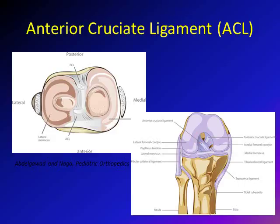What is the main function of the ACL? The main function of the ACL is that it prevents anterior displacement — or anterior translation — of the tibia on the femur. The ACL arises from the anterior part of the tibia and its primary role is to resist that forward tibial movement.